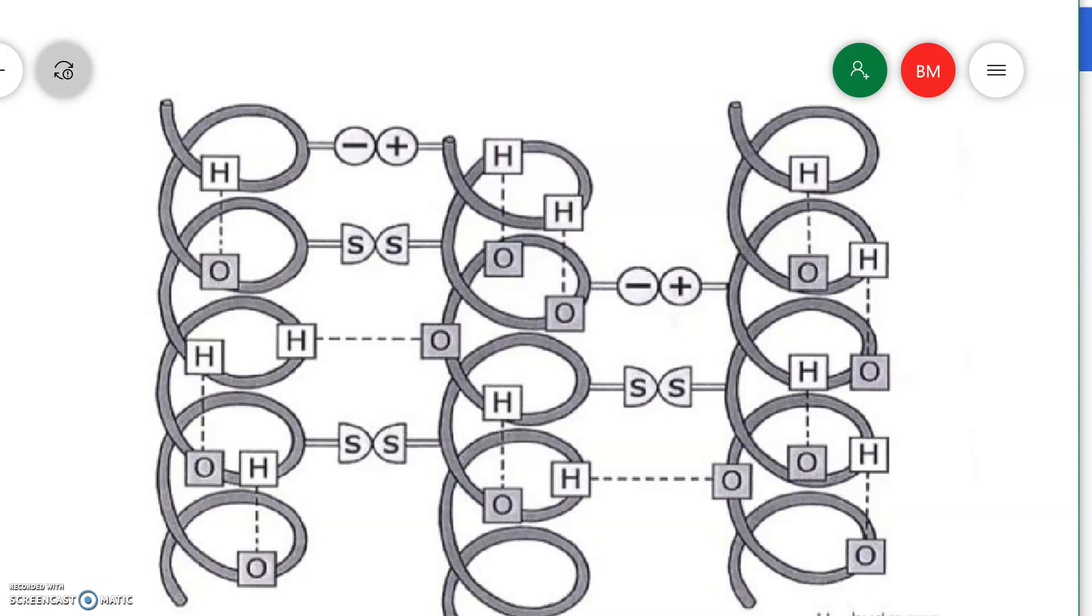This plus and minus is showing you that there's a charge attraction between adjacent protein chains. And the one we're going to focus on really today is a bond between two sulfurs in adjacent chains.